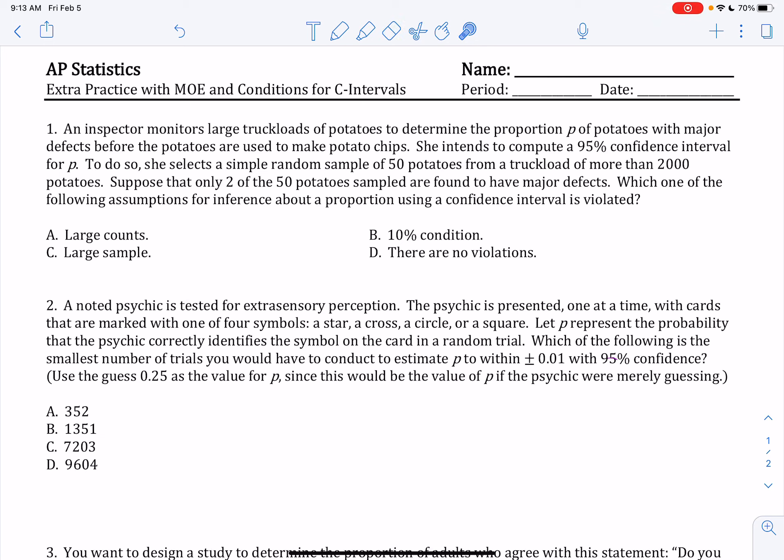Extra practice with margin of error and confidence intervals. In this first problem, an inspector monitors large truckloads of potatoes to determine the proportion that have major defects. She intends to compute a 95% confidence interval and selects a random sample of 50 potatoes from the truckload of more than 2,000. Suppose that only two of those 50 potatoes are found to have major defects. Which one of the assumptions for inference about a proportion using a confidence interval is violated?